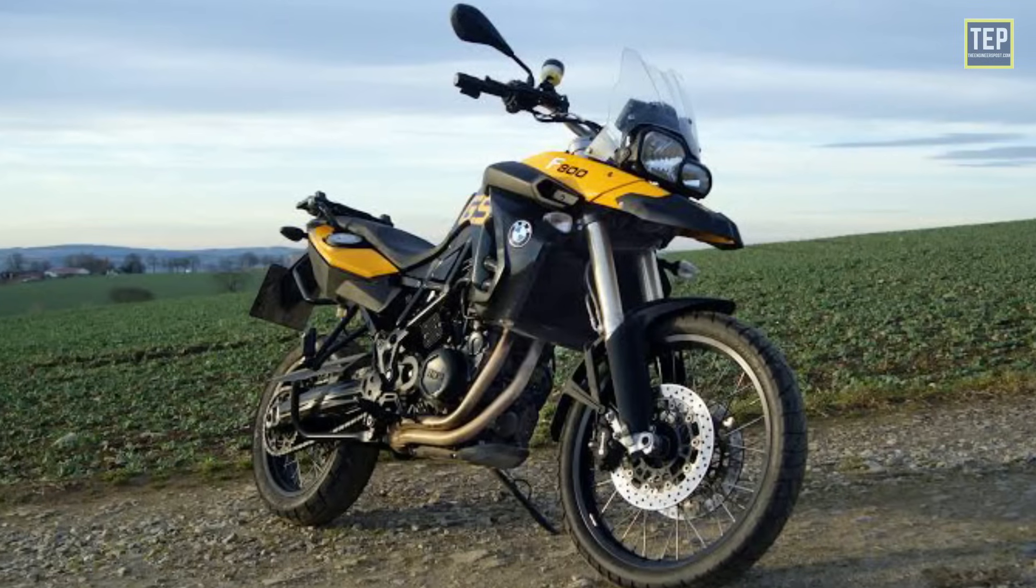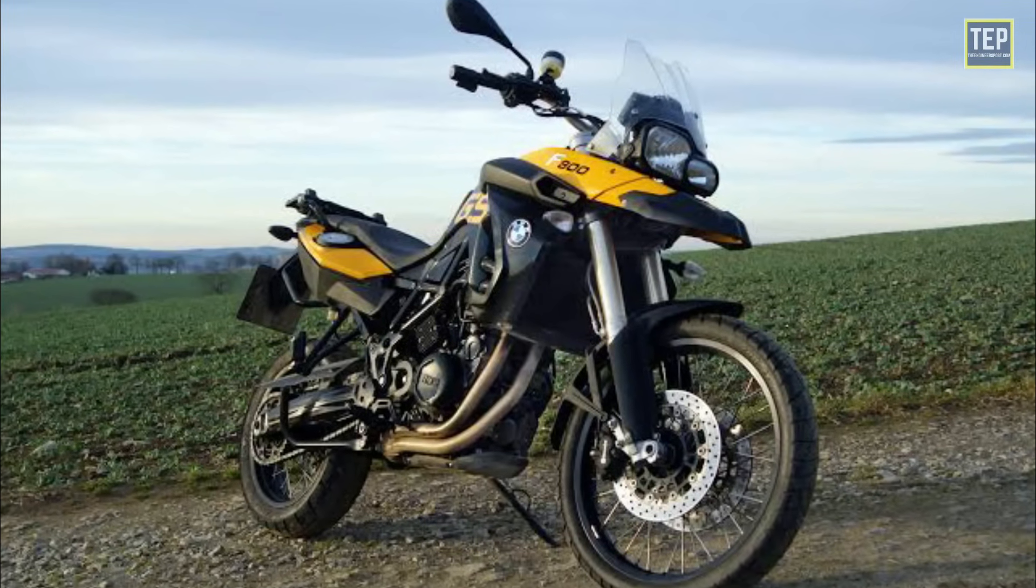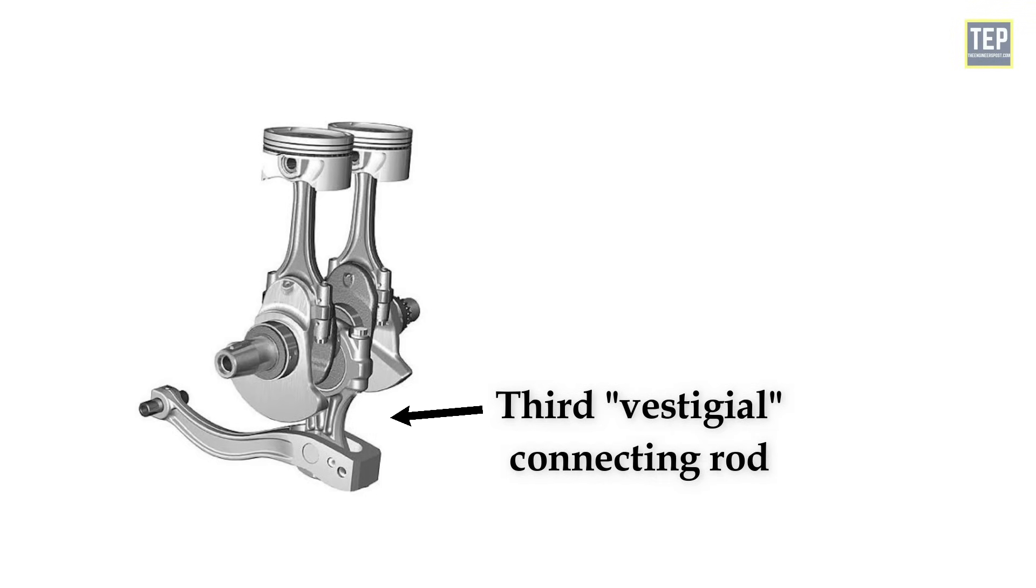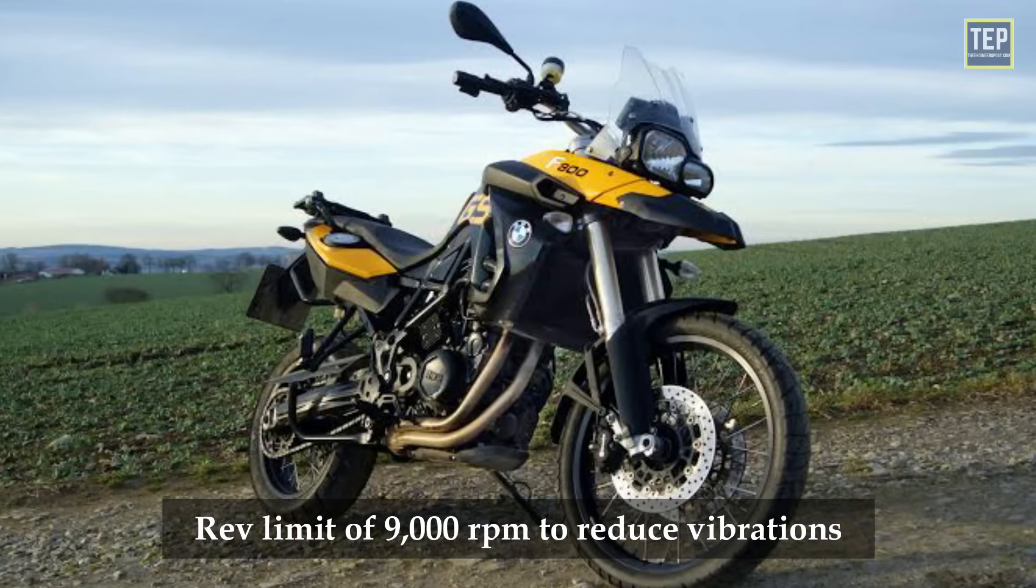The 2008 BMW F-series parallel twin motorcycles also used 360-degree crankshafts, with a third vestigial connecting rod acting as a counterbalance and a rev limit of 9,000 RPM to reduce vibrations.